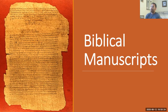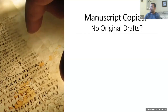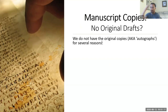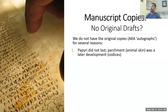How can we know that what we have now is what was originally written? One of the first questions we have is: do we have any originals? As of today, we do not have the original copies. There could be several reasons for that. The very first one is that the original copies were written on papyrus, which is not a very durable material.